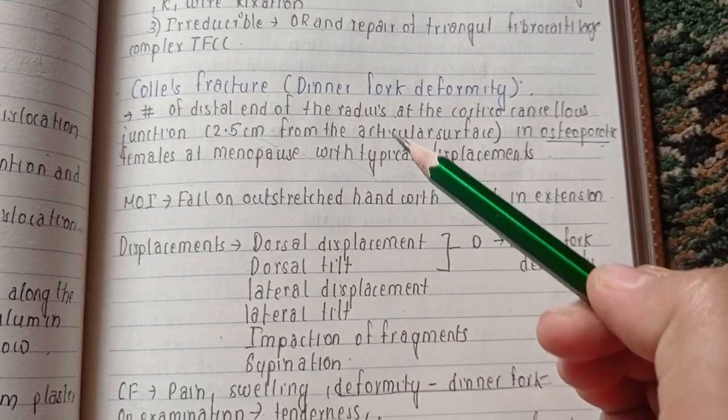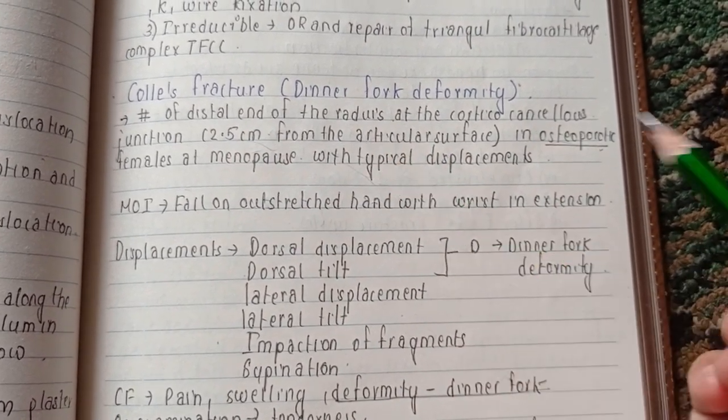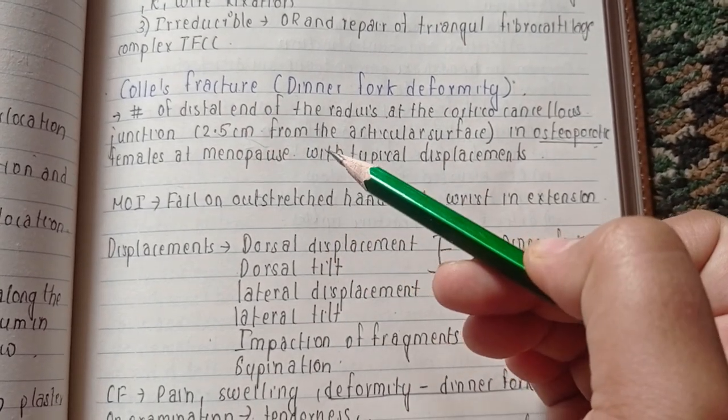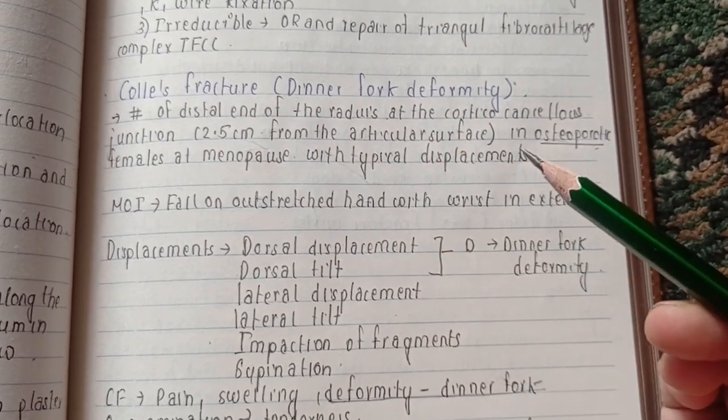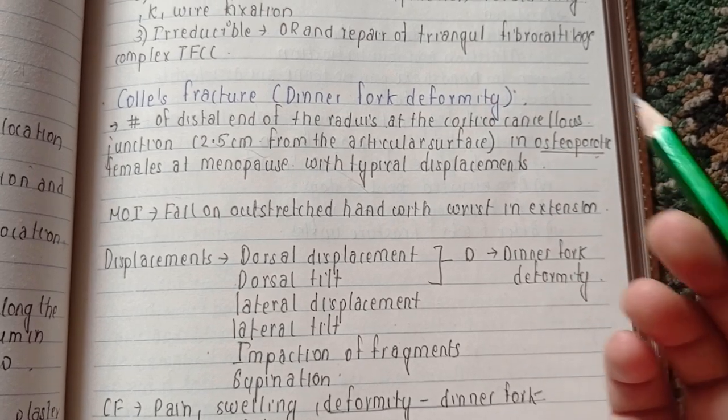The fracture occurs 2.5 centimeters from the articular surface in osteoporotic females at menopause with typical displacements.